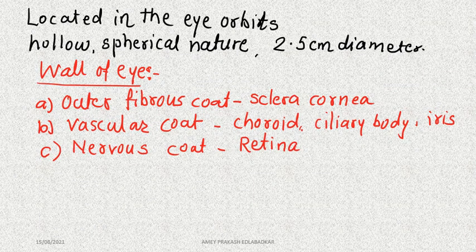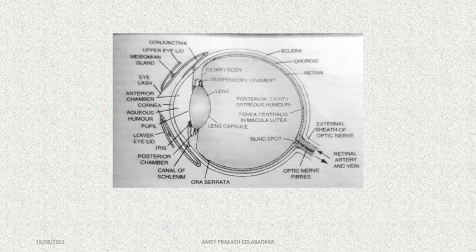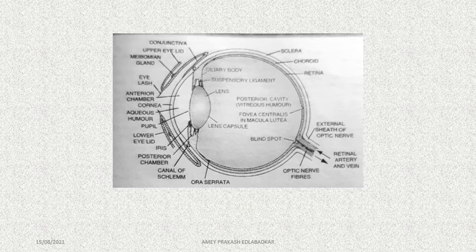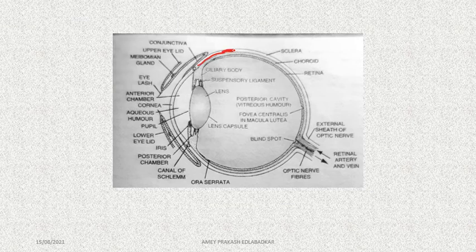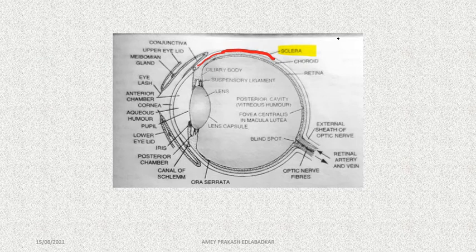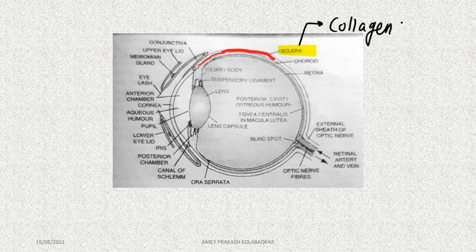Let us look at the structure of the eye and study all these parts one by one using a diagram. The fibrous coat shows presence of sclera. This is the sclera part of the eye — it covers most of the eyeball and is the white of the eye, containing a large number of collagen fibers.